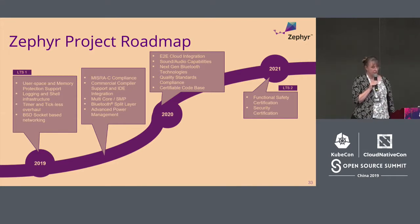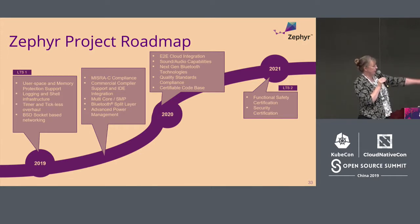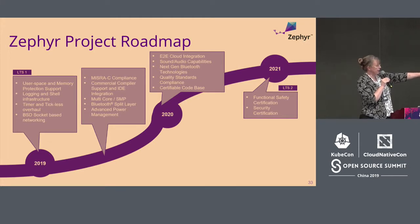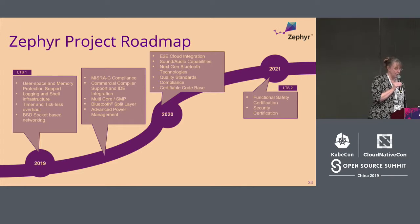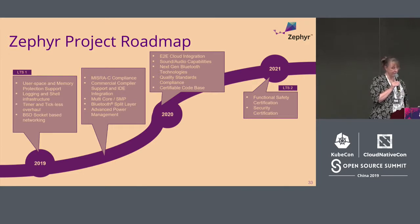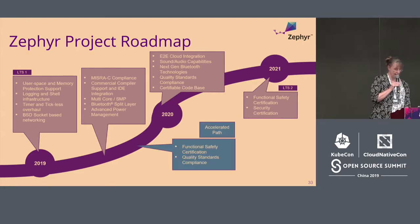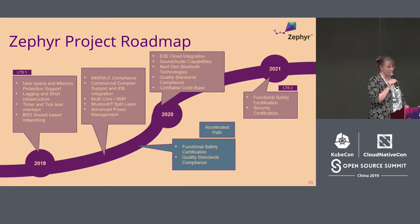Our roadmap is looking something like this right now: we're realistically going to be making sure we've got commercial compiler support, MISRA compliance, multi-core, split layer for Bluetooth, and advanced power management kicking in this year. As we head to 2020 we'll be adding more of the certifiable code base, and by 2021 we're trying to get some of our safety items publicly visible. One of our members is working on an accelerated path, so this roadmap may change.